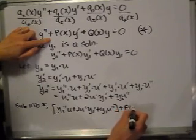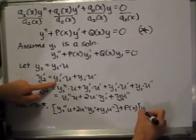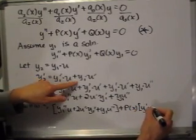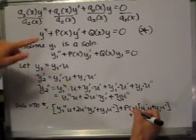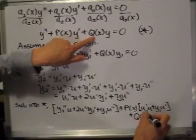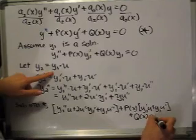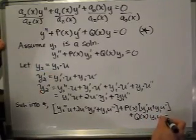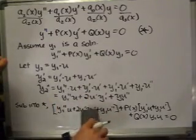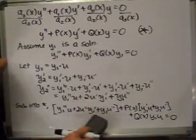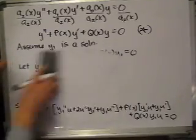Substituting back into the differential equation, we get: (y1''u + 2u'y1' + y1·u'') + p(x)(y1'·u + y1·u') + q(x)(y1·u) = 0. We now group the terms involving u double prime, u prime, and u respectively.